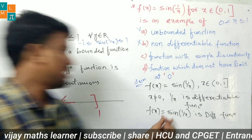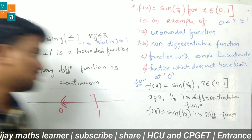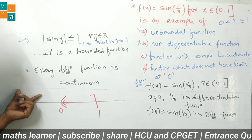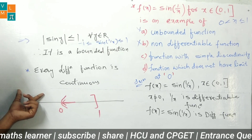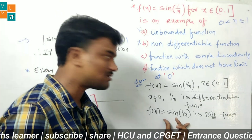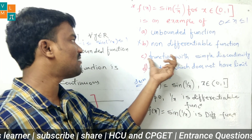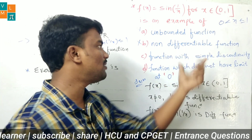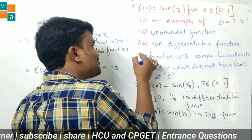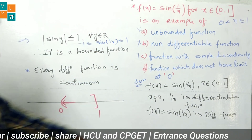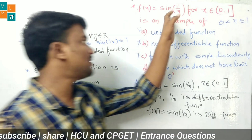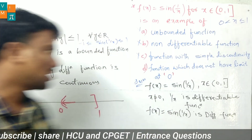Since sin(1/x) is a differentiable function, and every differentiable function is continuous, sin(1/x) is also continuous on (0, 1]. Option C says the function has a simple discontinuity — but since every differentiable function is continuous, sin(1/x) is continuous here. So option C is incorrect.